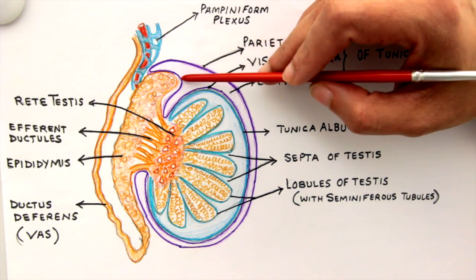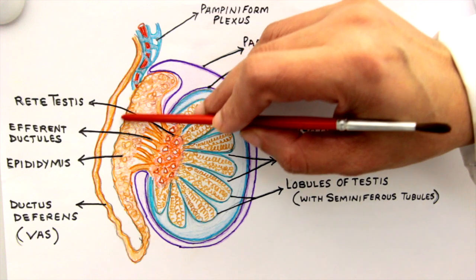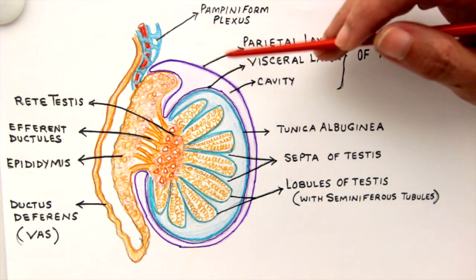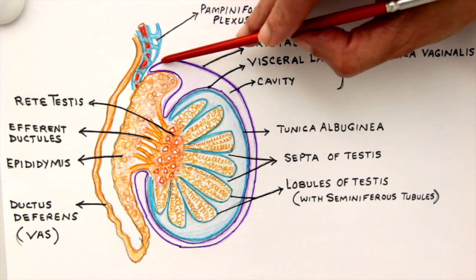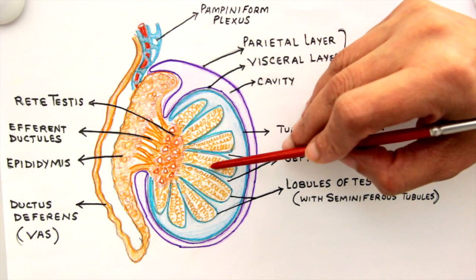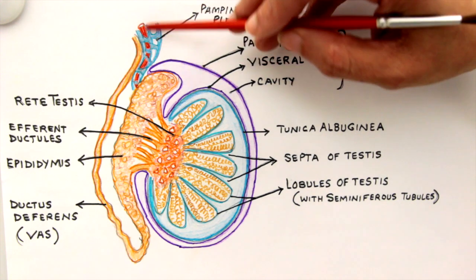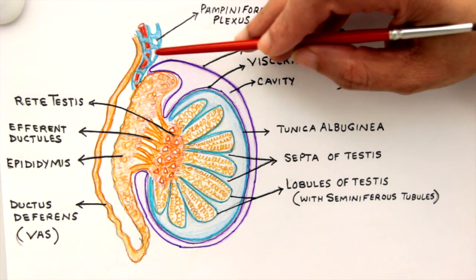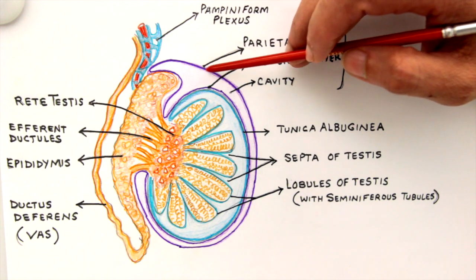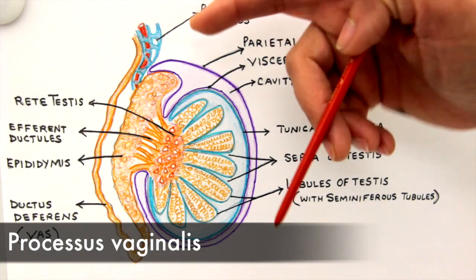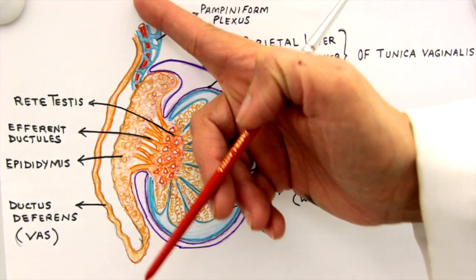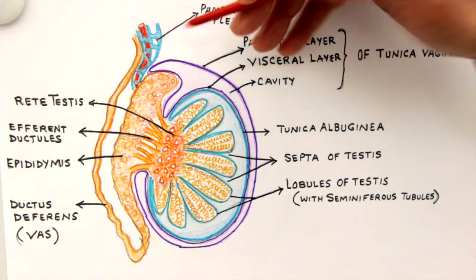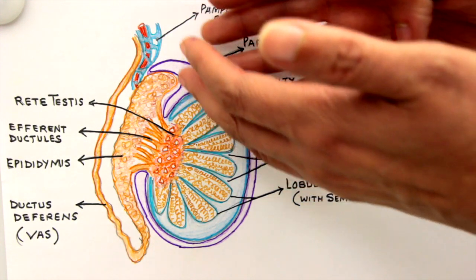Only the top surface of the epididymis and some of the lateral and back aspects are covered by the tunica vaginalis. The visceral layer stays with the viscus and the parietal layer extends into the spermatic cord along with the blood vessels and the vas. This extension of the tunica vaginalis into the spermatic cord is known as the processus vaginalis — a finger-like projection extending into the spermatic cord.